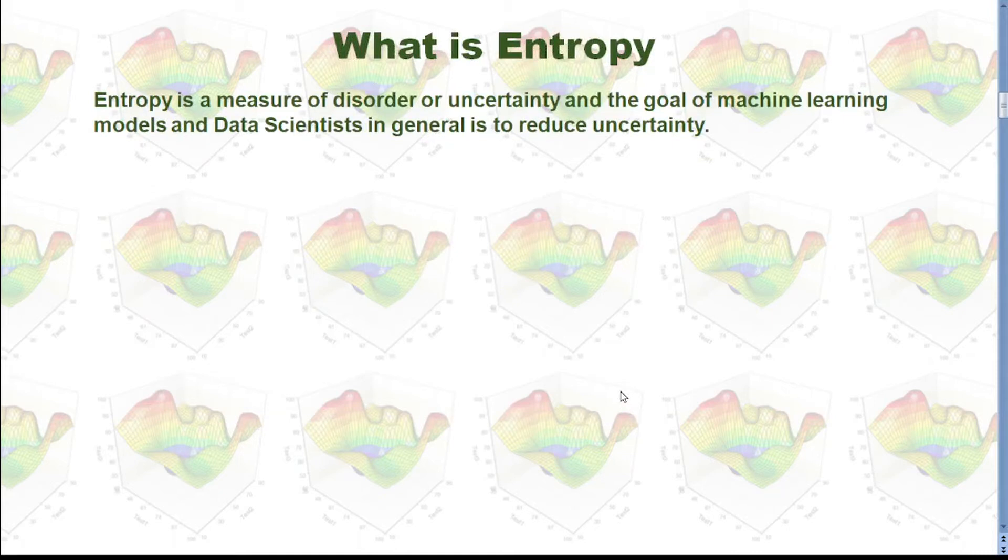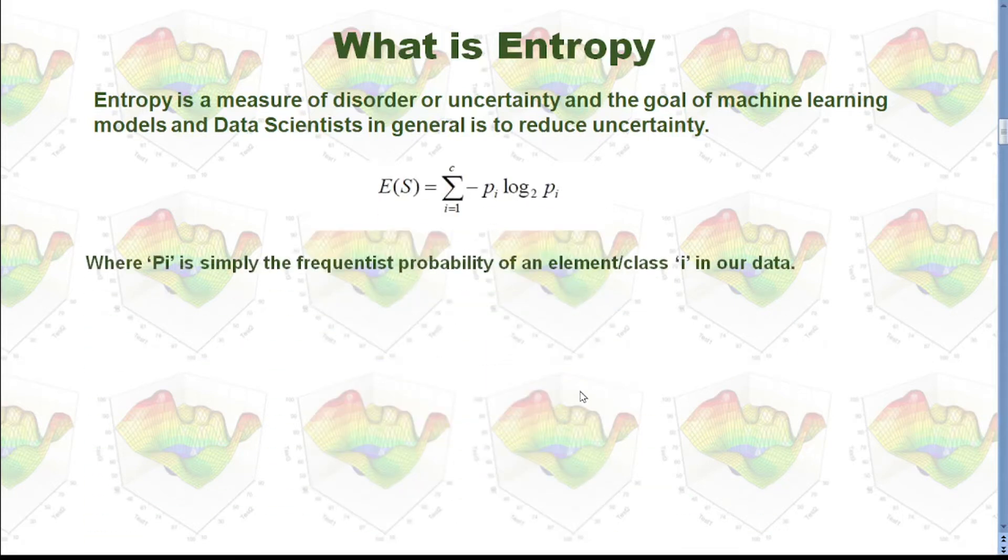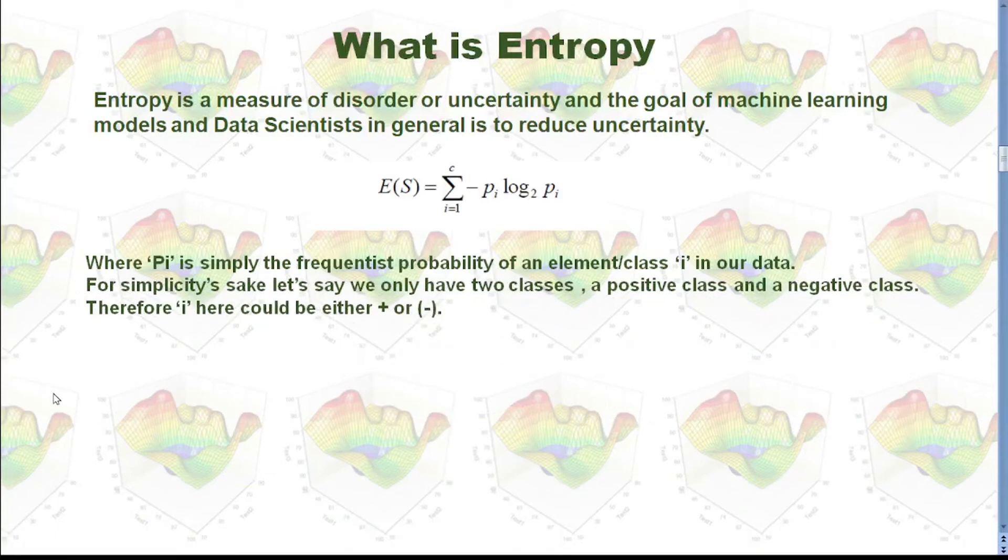So, what is entropy? Entropy is a measure of disorder or uncertainty. And the goal of machine learning models and data scientists, in general, is to reduce uncertainty. This is the formula about entropy. Now, let's say we only have two classes, a positive class and a negative class. This p_i is simply the probability of class i in our data.